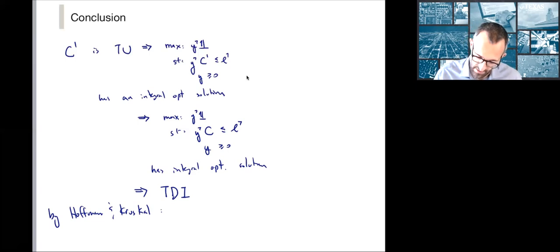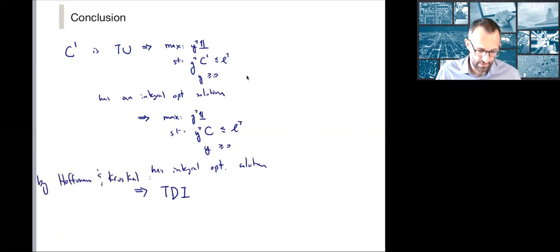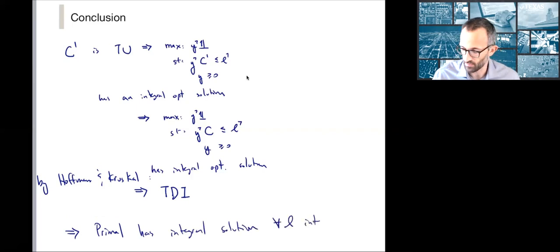Therefore by the Hoffman and Kruskal result that we gave several lectures back when we first started talking about total dual integrality, this implies total dual integral. Therefore this implies that the primal, which was our arborescence problem, has an integral solution for any L integral. That is our story. This shows that the R-arborescence problem, the LP relaxation, is in fact exact.